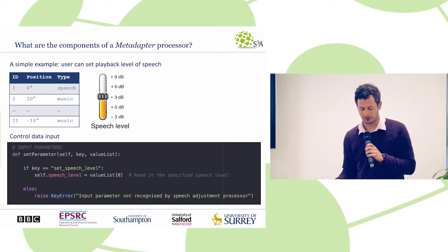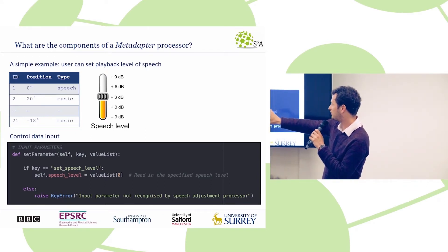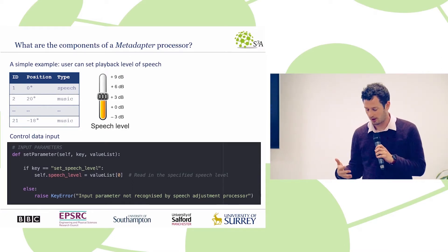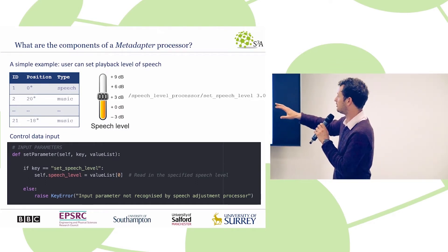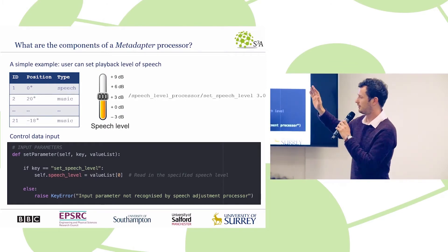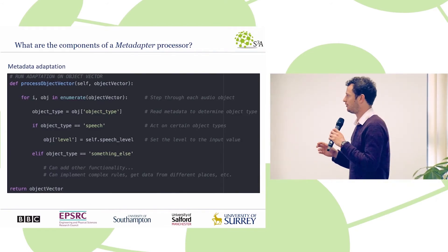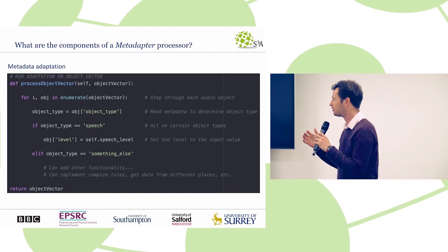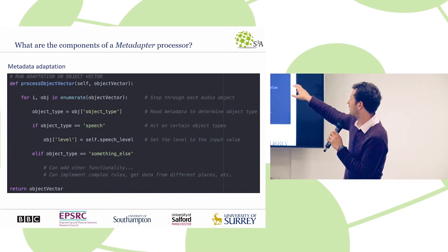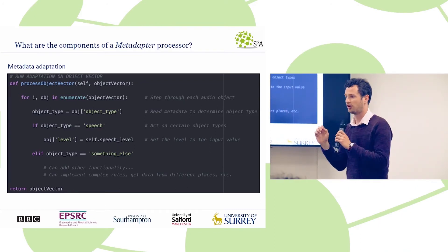The first block of the Python software is a function for taking some input, and we simply define a key input — a label 'set speech level' — so anything the Metadapter gets passed with this input key will be taken as the speech level. It's a simple OSC message with the key field 'set speech level' and the target value, in this case 3 decibels. The next component is the adaptation loop. The function is called 'process object vector' and we simply repeatedly run through the objects, look in the advanced metadata to find the object type, and if we match the speech object type, change the object level to the target speech level.